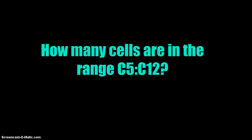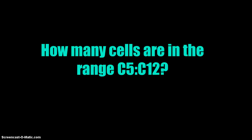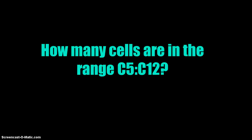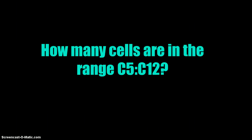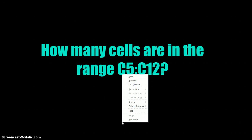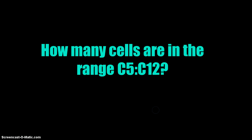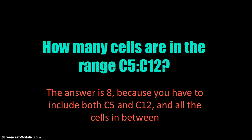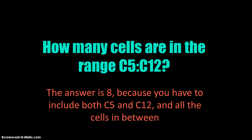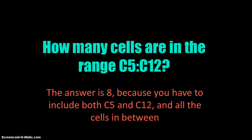One thing you've had to do in past exams, and will have to do again, is count the number of cells in a range. Remember that you are counting both C5 and C12, and everything in between. If you're having a hard time doing this, write it out or draw it out on a scratch piece of paper. The answer is 8, because you have to include both C5 and C12 and all the cells in between — counting 5, 6, 7, 8, 9, 10, 11, 12, that's 8 cells.